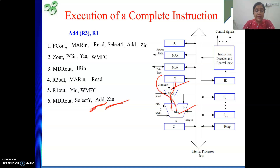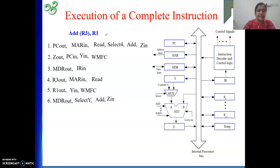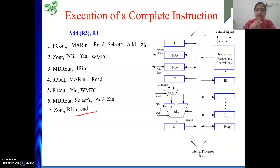The result of addition is in Z register. In the next step: Z out, then R1 in — the result is transferred to register R1. This completes the instruction. At the end of an instruction, we generate the End signal. End indicates the end of this particular instruction (not the end of the program). The implication of this End signal will be explained shortly.